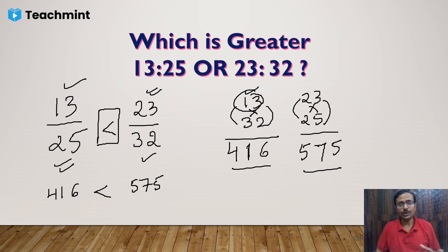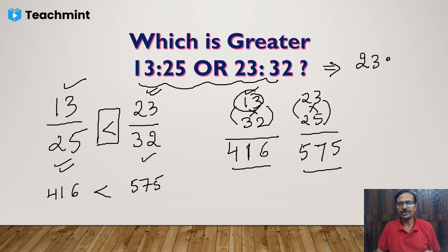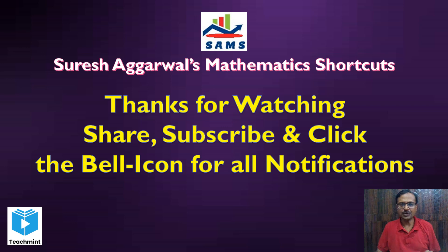This is actually a trick to compare fractions, which has been generalized to ratios. In this case, the greater ratio is 23:32. These are the tricks that make you resourceful and help you develop faster calculation speed.